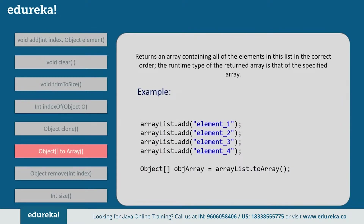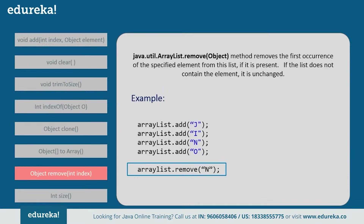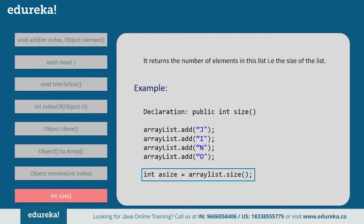Next, toArray — this method returns an array containing all elements in the list in the current order. Next, the remove method — this removes the first occurrence of the specified element from the list if it is present. For example, if you want to remove 'n' from the list, it removes the first occurrence of 'n' only; any additional occurrences remain. Next, size — this returns the number of elements in the list. Suppose we have added four elements, then it returns the size of the ArrayList as four.